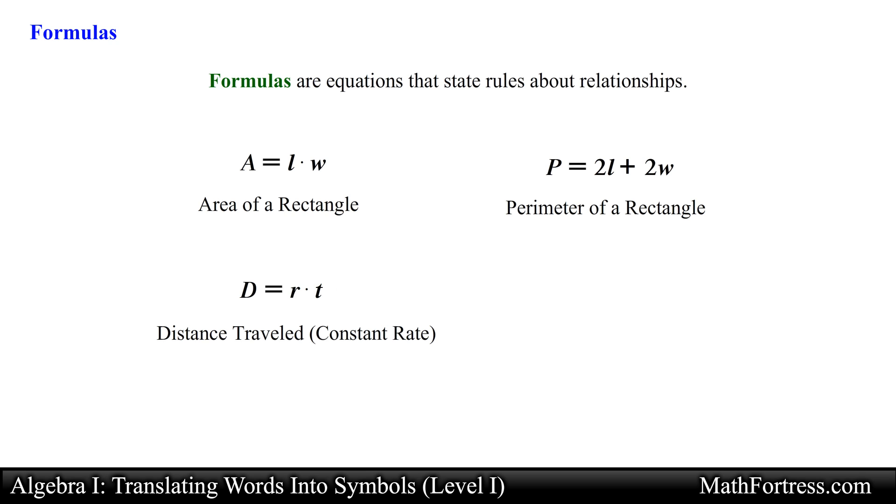Finally, to find the monetary cost of a certain number of items we use the formula C equals NP. Where N represents the number of items and P represents the price per item.